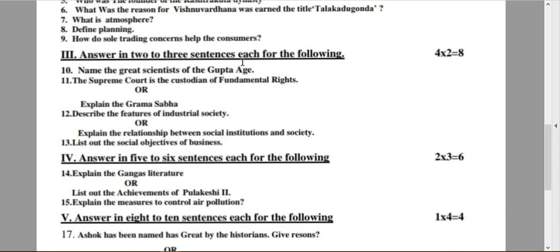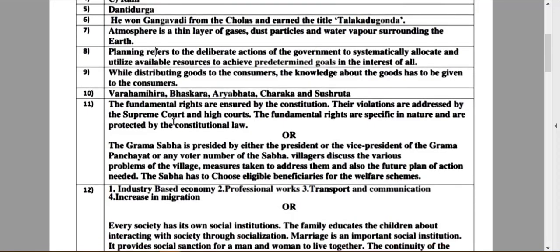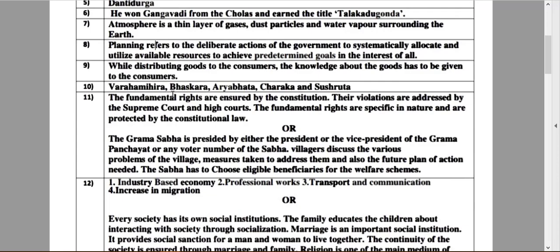Let's move on to third main. Answer in two or three sentences, each of the following. Here is two marks question, each one carries two marks. So, question number 10: name the great scientists of Gupta age. Answer is: Varahamihira, Bhaskara, Aryabhata, Charaka and Sushruta.